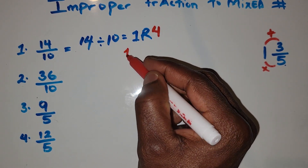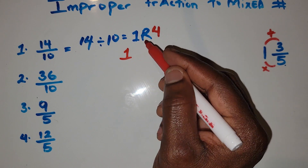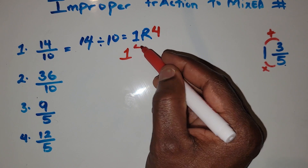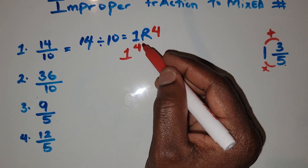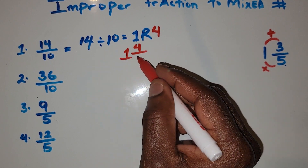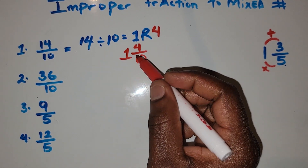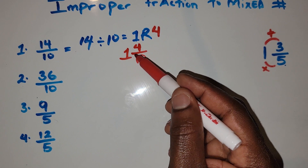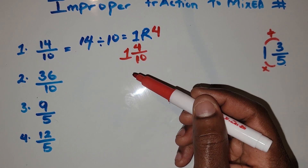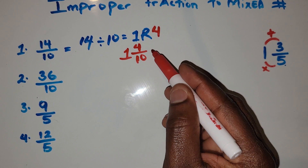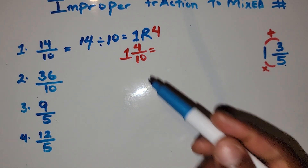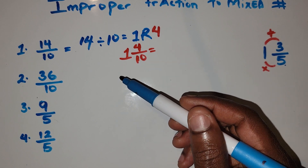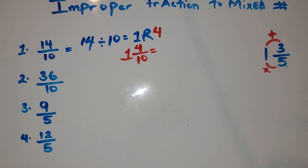So how do we write this as a mixed number? We take the quotient, which is the answer from the division, and make it the whole number. Then the remainder, which is 4, becomes the new numerator, and we just write the denominator 10 down below.